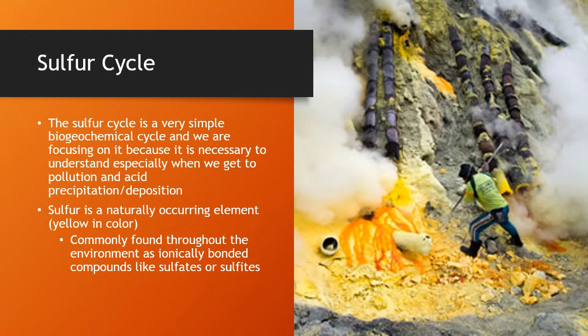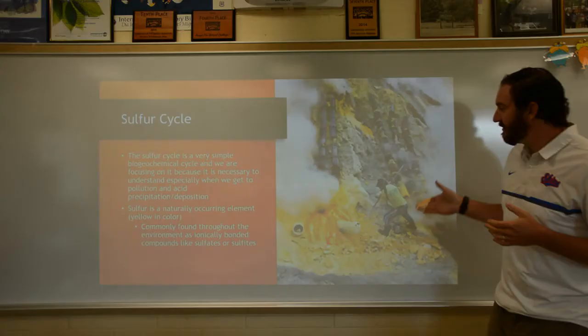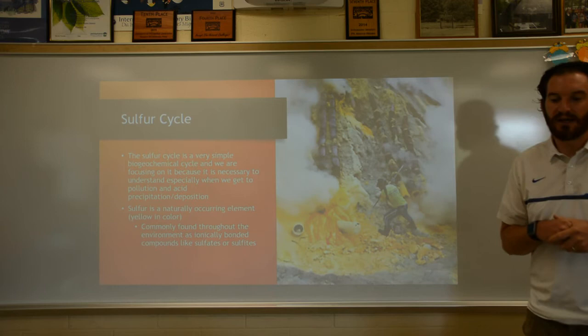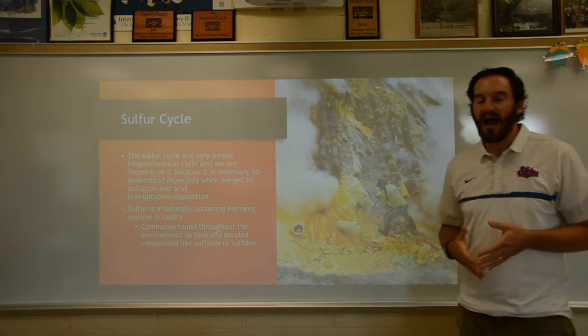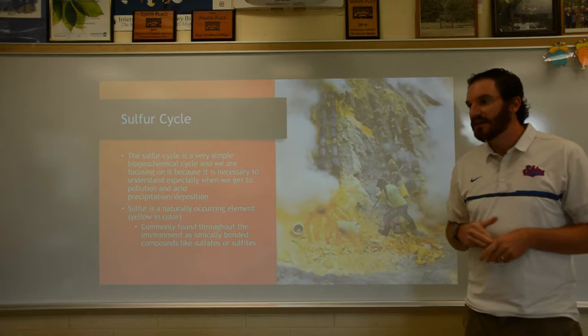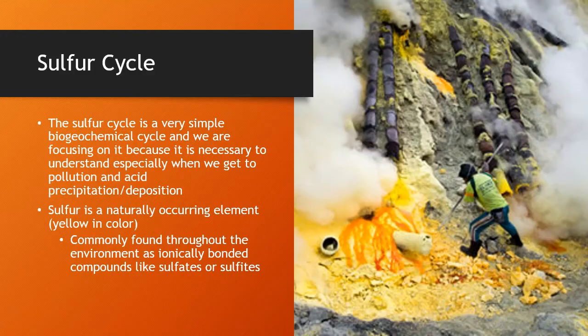Sulfur is a naturally occurring element, and it's yellow in color. This person here is harvesting sulfur in Indonesia — there is a very famous volcano where people actually go and harvest sulfur from a pretty much active volcano. It's incredibly putrid smelling, with hydrogen sulfide spewing everywhere. Sulfur is commonly found in ionically bonded substances through sulfates and sulfites, like sulfuric acid.